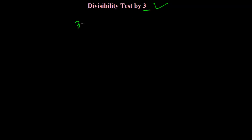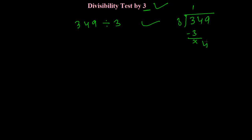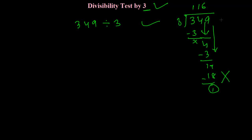For example, take the number 349. I need to check whether 3 is going to divide it perfectly or not, without any remainder. In the classical method, we divide 349 by 3. 3 times 1 is 3, cancel, drop 4, 3 times 1 is 3, remainder 1, then 19, and 3 times 6 equals 18, so we get 1 remaining.